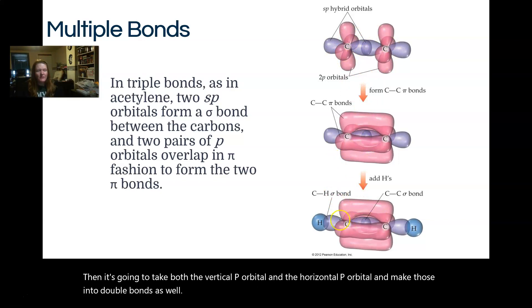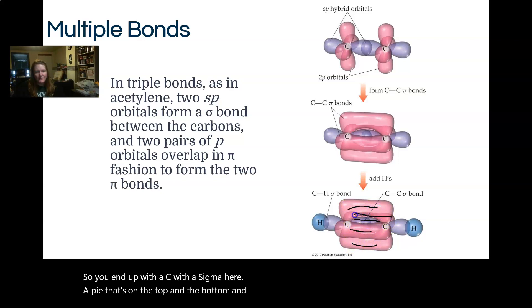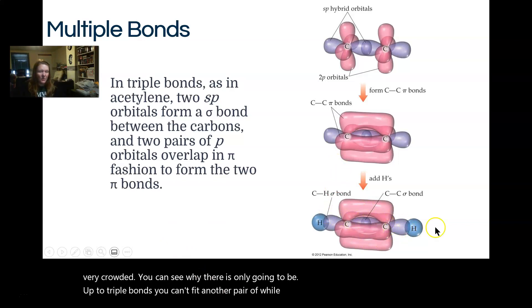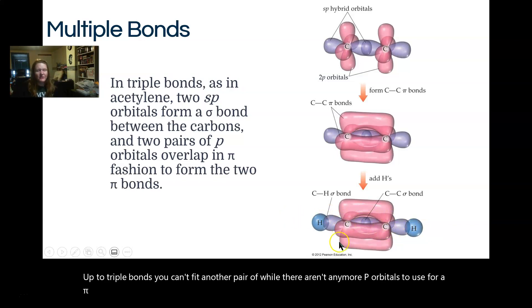Then it's going to take both the vertical p orbital and the horizontal p orbital and make those into double bonds as well. So you end up with a C with a sigma here, a pi that's on the top and the bottom, and another pi in the back and the front. So this is very crowded. You can see why there is only going to be up to triple bonds. You can't fit another pair of electrons. There aren't any more p orbitals to use for a pi bond, but if there were, you couldn't fit them anywhere around there.